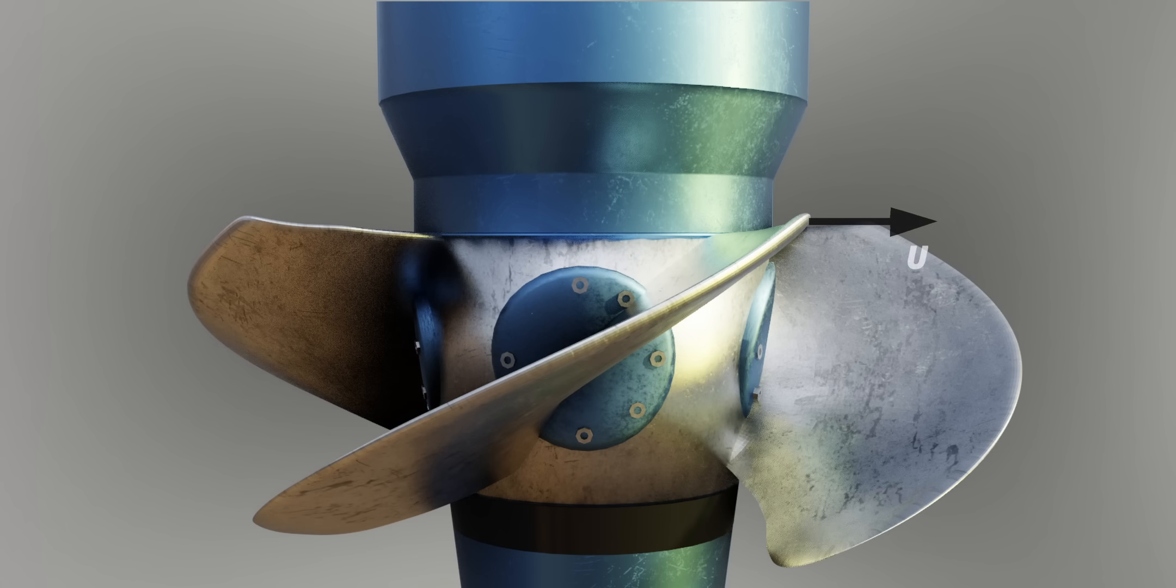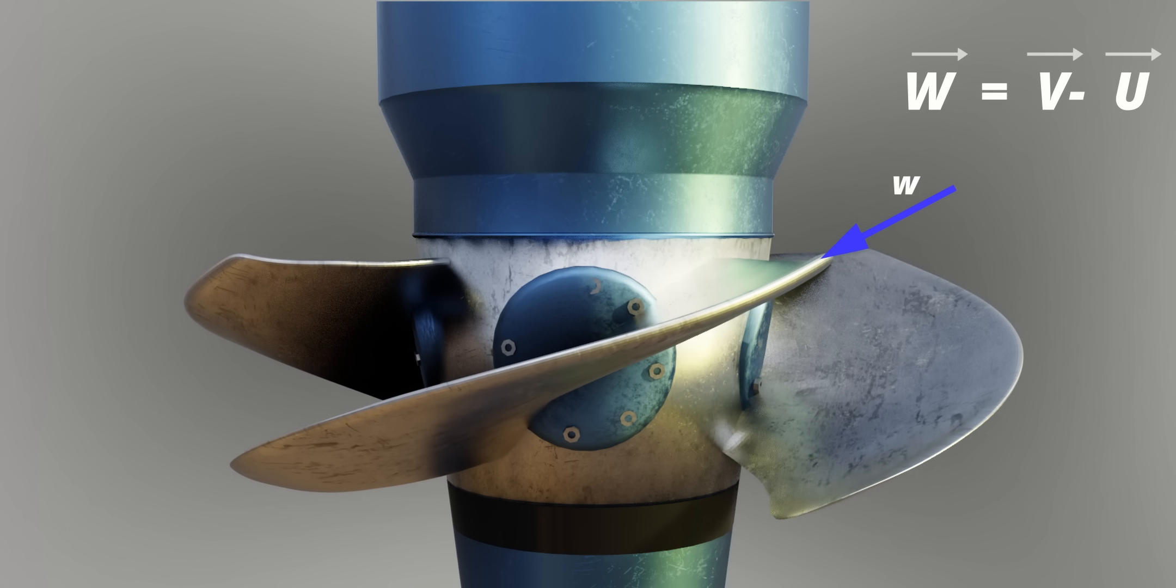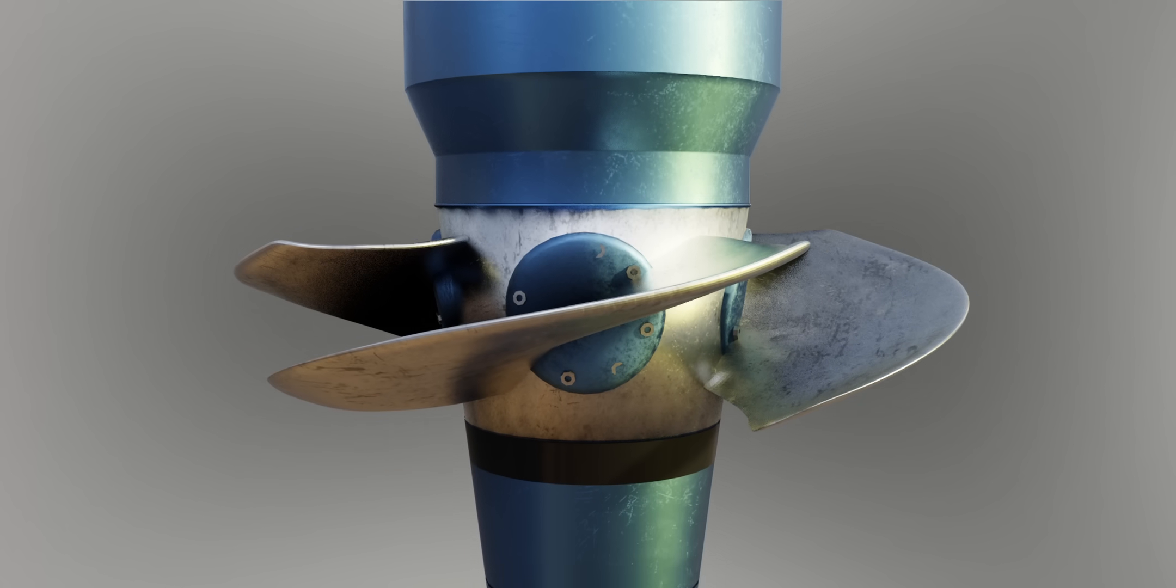Similarly, if the power demand is low, the flow rate must be reduced. In this situation, the new relative velocity angle is as shown. The runner blade must rotate in the opposite direction to be at the optimum angle of attack.